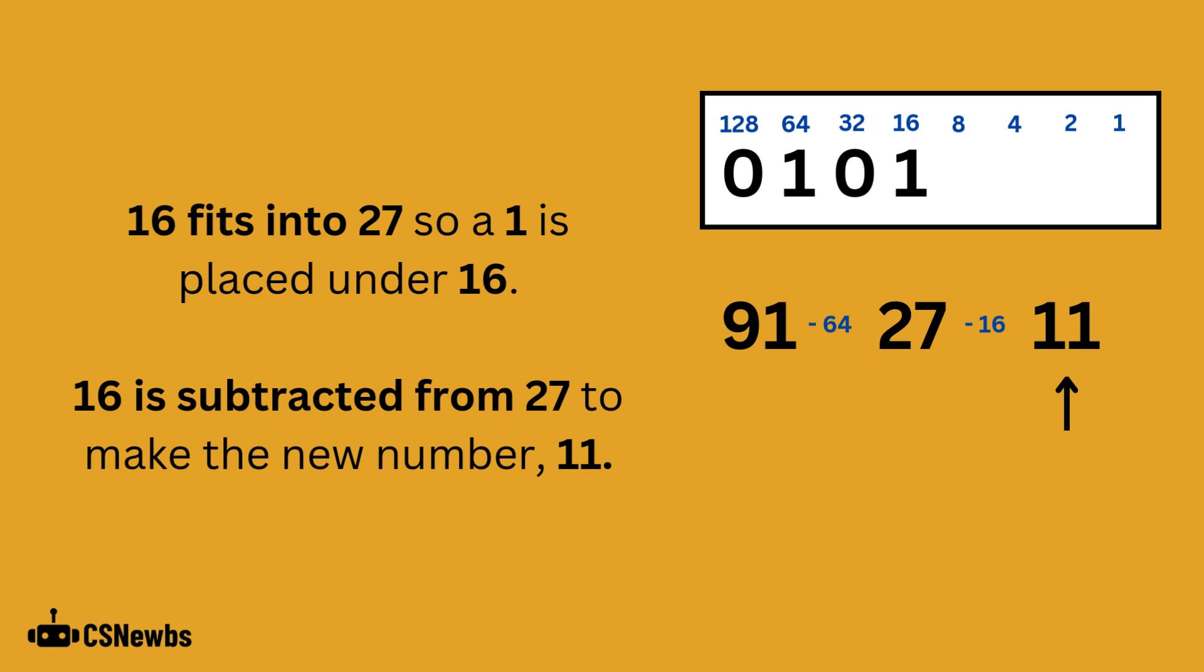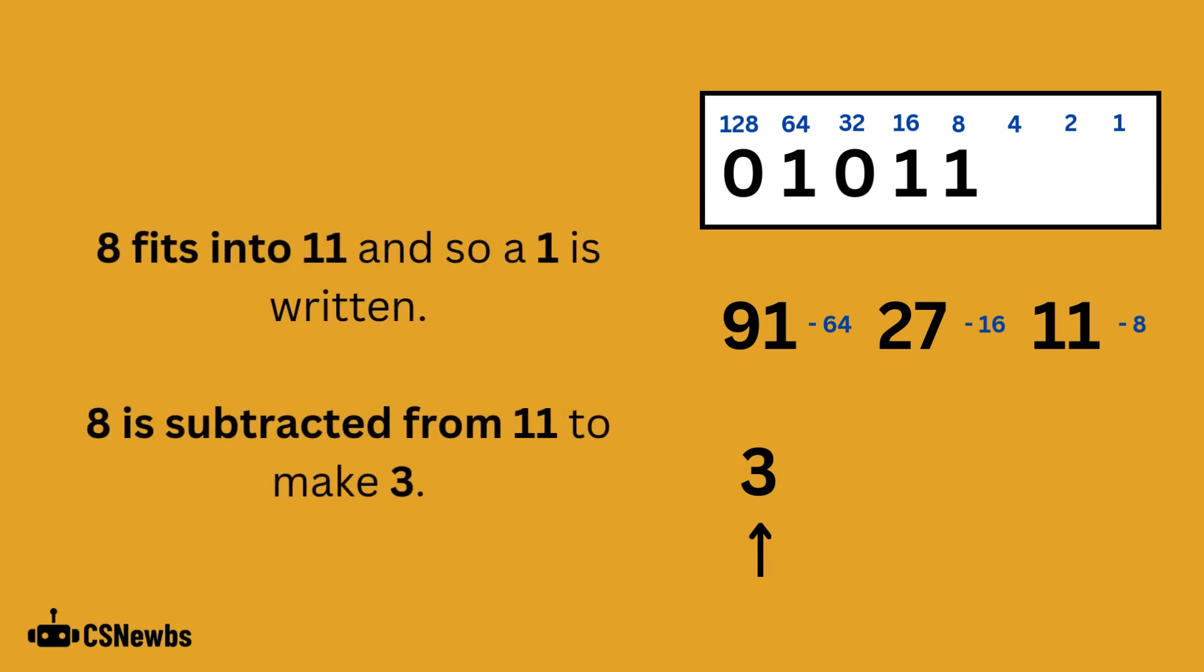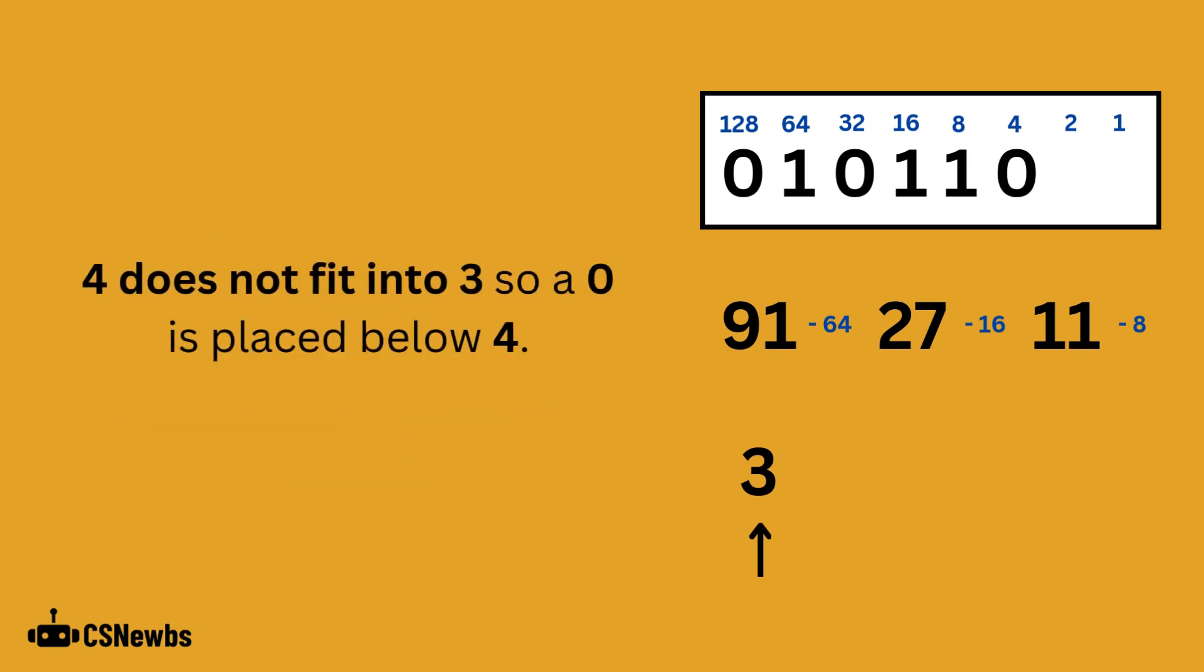16 does fit inside of 27, so we write a 1 below the 16 place value. We subtract 16 from 27 to make a new denary number of 11. 8 fits into 11, so we write a 1 below 8. We subtract 8 from 11 to make 3. 4 does not fit into 3, so we write a 0 beneath the 4 place value.